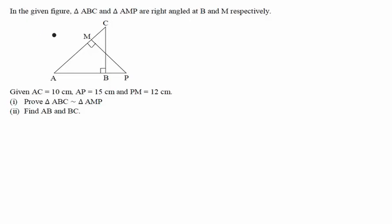Let's have a look at some important questions on similarity. The question says in the given figure, triangle ABC and AMP are right angled at B and M respectively. Also given that AC is 10 cm, AP is 15 cm and PM is 12 cm.